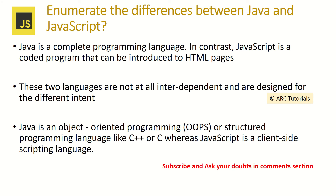The next question is: explain the differences between Java and JavaScript. A lot of people get confused between Java and JavaScript. Java is a complete programming language; in contrast, JavaScript is a coded program that can be introduced into HTML pages. These are two different, separate languages — they are not interdependent and are not related. Java is an object-oriented programming language, whereas JavaScript is a scripting language.